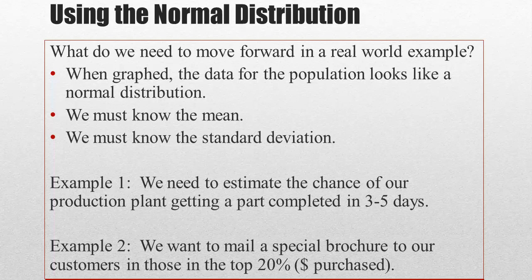In example 2, we want to mail a special brochure to our top clients. Now, based on historical evidence, we know that the population is normally distributed, because we double-check that before we move forward. We know the average amount that a customer purchases. And we know the standard deviation for that purchase amount as well.